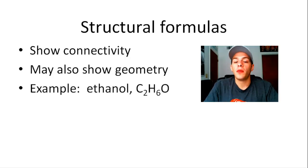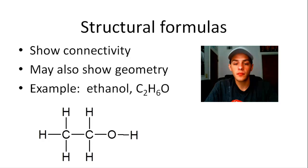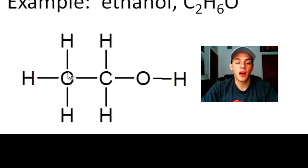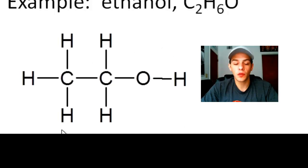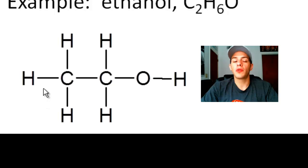As an example, let's consider the molecule ethanol, which has the molecular formula C2H6O — that is also ethanol's empirical formula. A structural formula for ethanol shows exactly which atoms are connected to which: two carbons bonded to one another, one carbon with three hydrogens bonded to it, the other carbon with two hydrogens and an oxygen bonded to it, and that oxygen also has another hydrogen bonded to it. However, this formula doesn't really show geometry — the bond angles shown are not actually 90 degrees.